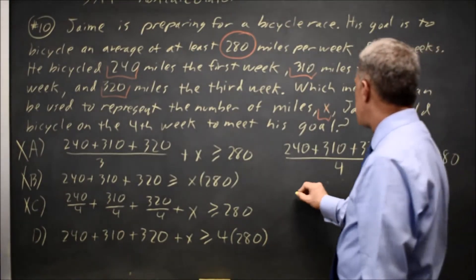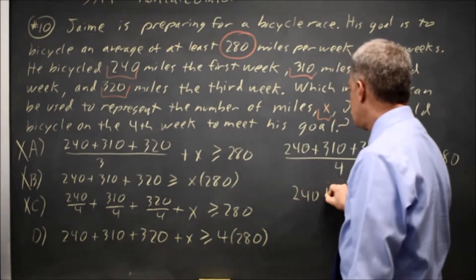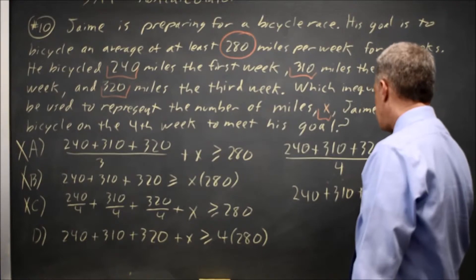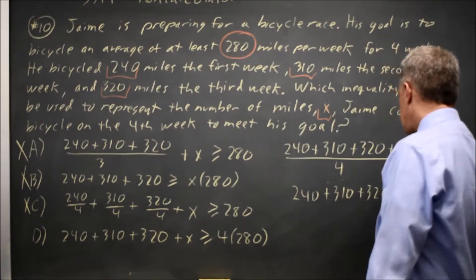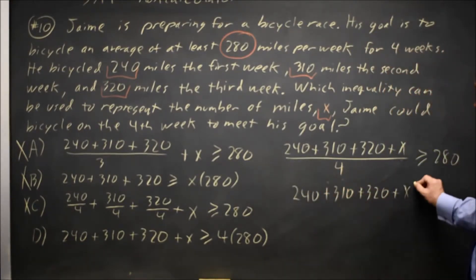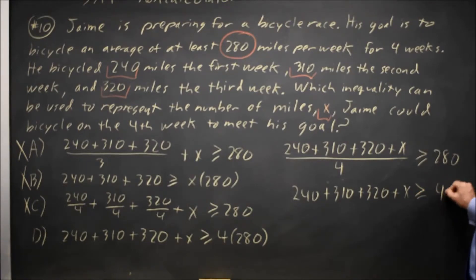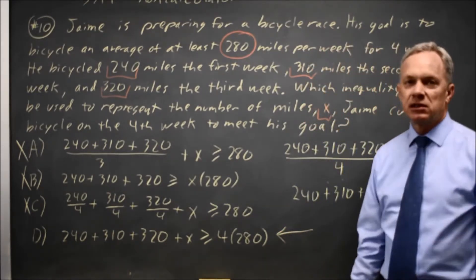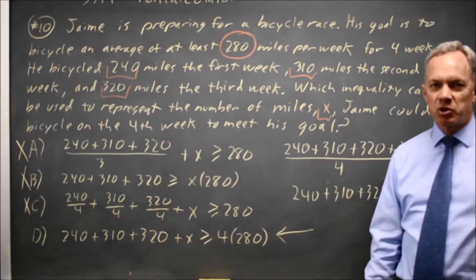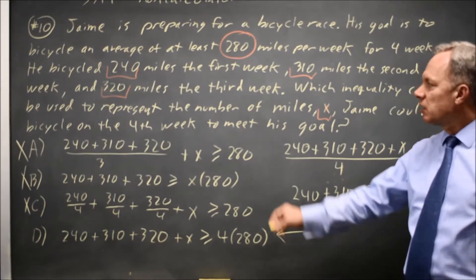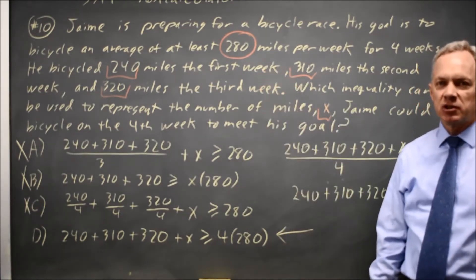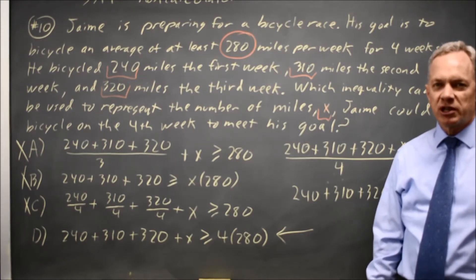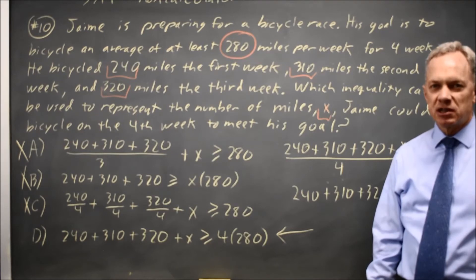If I multiply both sides by 4, I get 240 plus 310 plus 320 plus X. Multiplying by 4 cancels the denominator and leaves 4 times 280 on the right, which is what choice D has. Choice D is an awkward way of writing the average, but College Board likes awkward. They often ask for the average of several numbers, so make sure you're proficient with different ways of writing averages because they do like to mix things up.